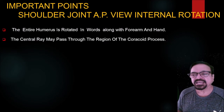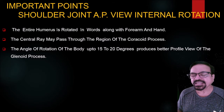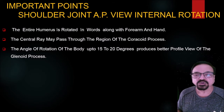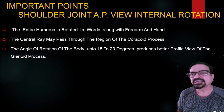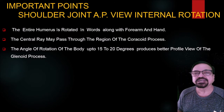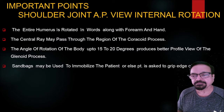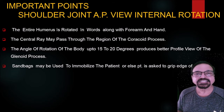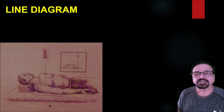The central ray may pass through the region of the coracoid process, which can easily be palpated. The angle of rotation of the body up to 50 to 20 degrees produces a better profile view of the glenoid fossa. If the glenoid fossa and glenoid process need to be seen, you have to elevate the opposite shoulder so that the entire scapula will be parallel to the table, and the thumb position will be upward. That will give the best relation of the glenoid and the head. Sandbags may be used to stabilize the patient, or the patient can grip the table edge. Our practice is to ask the patient to hold the table edge, which by and large suffices. But in case of a traumatic patient, a bolster or sandbag may be inserted to keep the patient stable.